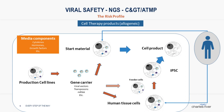In the cell therapy field, the risk profile is even more expanded. You are not starting with a cell line frequently — you are starting with patient or donor cells. That is the starting material, and that is the difference from the gene vector area. The risk of those patient or donor cells is that, from the very beginning, they can harbor viruses. It can be latent virus, or even new emerging viruses you don't know about yet. These cells are also highly susceptible to human-specific viruses.